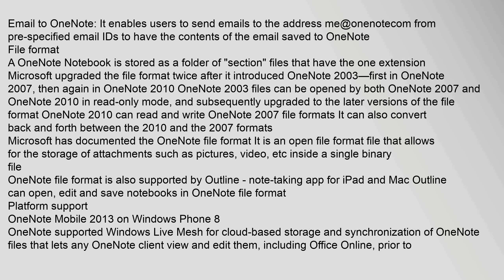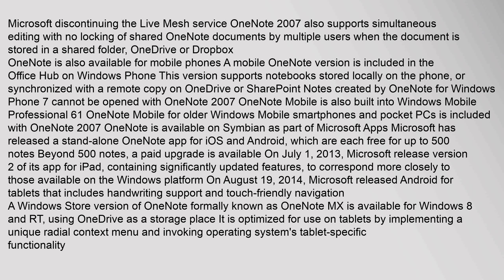OneNote supported Windows Live Mesh for cloud-based storage and synchronization of OneNote files, letting any OneNote client view and edit them, including Office Online, prior to Microsoft discontinuing the Live Mesh service. OneNote 2007 also supports simultaneous editing with no locking of shared OneNote documents by multiple users when stored in a shared folder. OneNote is also available for mobile phones via OneDrive or Dropbox. A mobile OneNote version is included in the Office Hub on Windows Phone, supporting notebooks stored locally or synchronized with a remote copy on OneDrive or SharePoint.